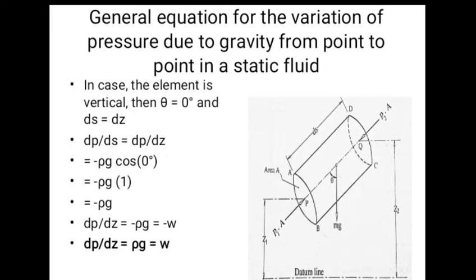In case the element is vertical, then theta equals zero degrees and Ds equals Dz. Putting these values in the general equation, we get Dp by Dz equals minus Rho G, which equals minus W. If Z1 and Z2 are considered from the free surface of liquid, then Dp by Dz equals Rho G equals W.